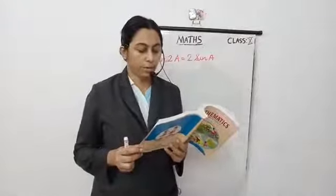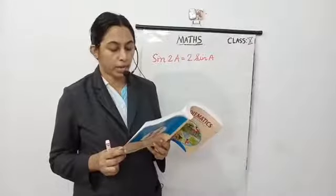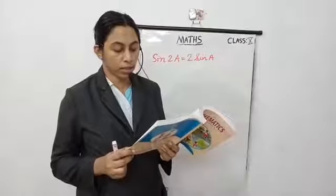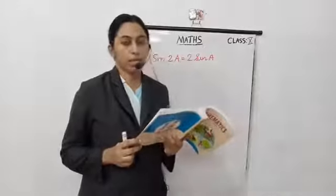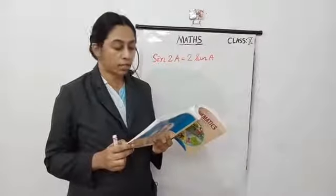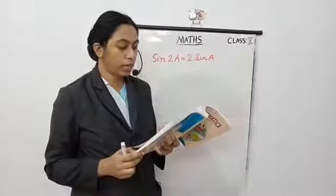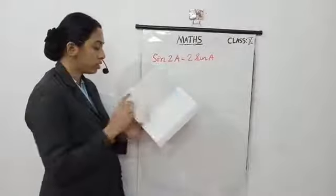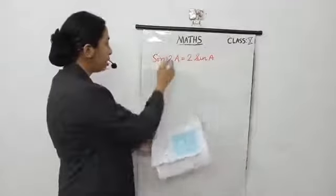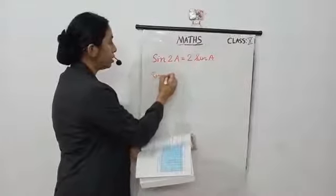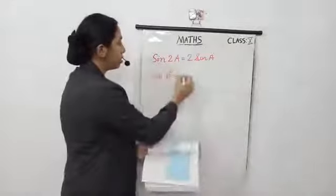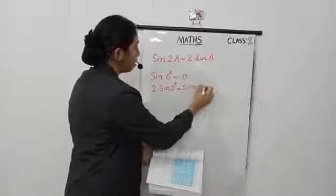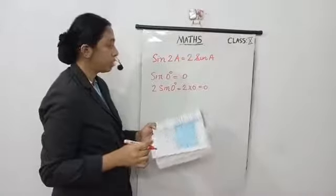Sub-question 3: sin 2A equals sin A — this is true when A equals which option? Option A: 0°, option B: 30°, option C: 45°, option D: 60°. So we substitute each angle. First option is 0°: sin 2A means sin(2 × 0°) which is sin 0° = 0. Now 2 sin A is 2 sin 0° = 2 × 0 = 0. Both sides equal 0, so option A, 0°, is correct.